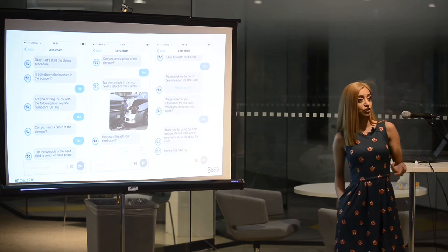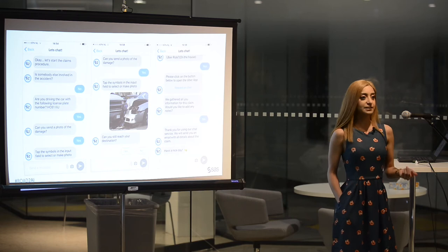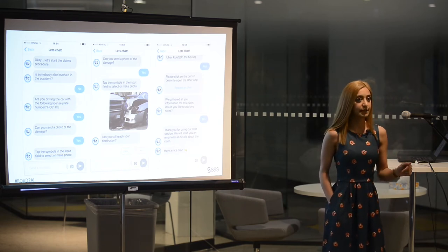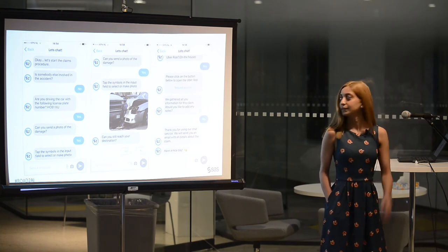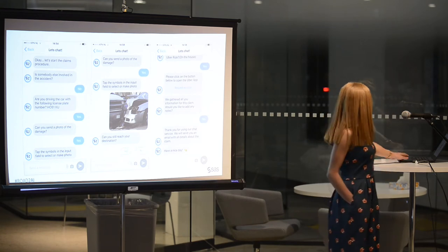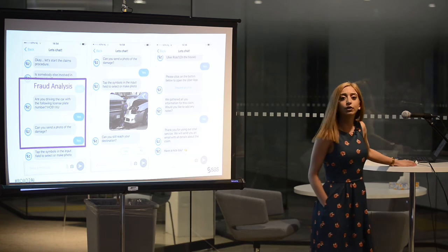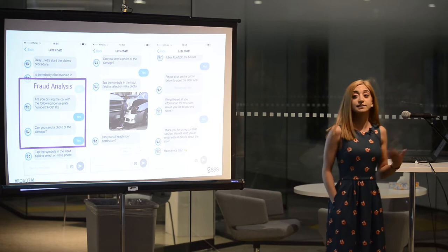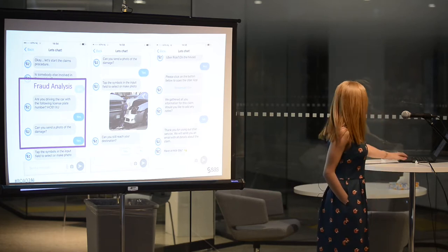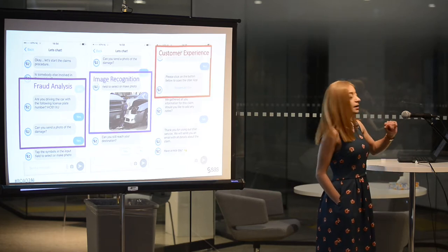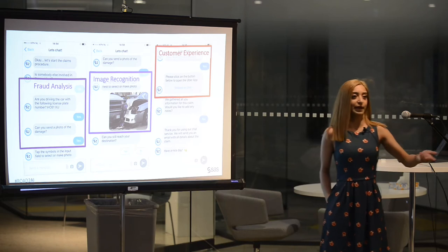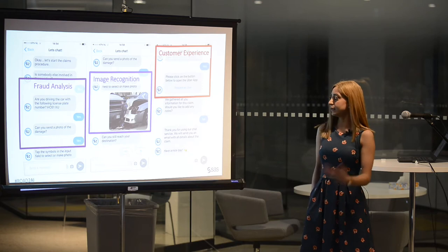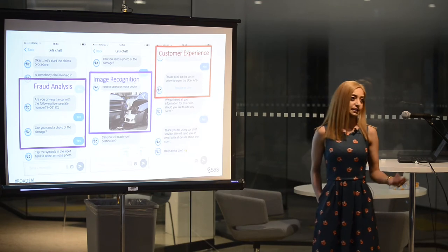It asks you qualifying questions like your license plate number. It uses a rule-based system to make sure this is not a fraudulent case and that it matches your records. It also asks you for a picture of the crash, and using image recognition, it starts assessing the depth of the damage. Then it goes an extra mile and offers to call you an Uber if your car is in a non-drivable condition, and it starts your claims process in the background.